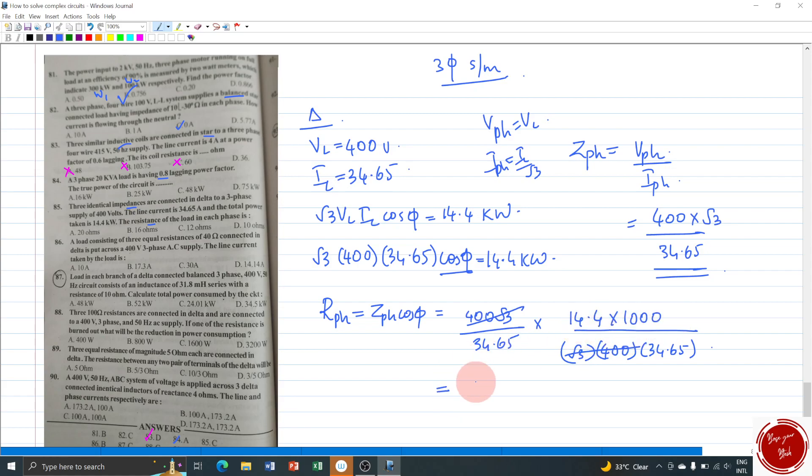400 root 3. Now the value here, the numerator is left with 14.4 into 1000 means divided by 34.65 whole square. 34.65 square means what is 34 square? 34 square is 4 and 3, 12, 9 plus 1, 10. So 6, 5, 1, 1, 5, 6 is 34 square. But we need something a little bit higher value than 1156. So let me round it as 1200. The nearest value is 1200. Now when I cut this two zeros, I am left with 144 by 12 which is 12. So 12, what is the unit? This resistance, so 12 ohms is the answer. 85 option C.